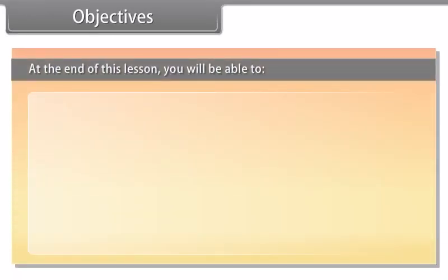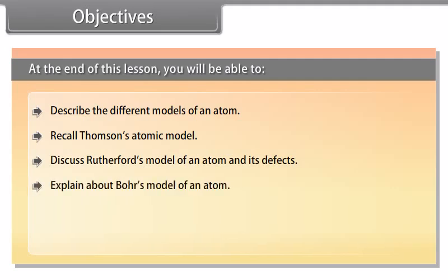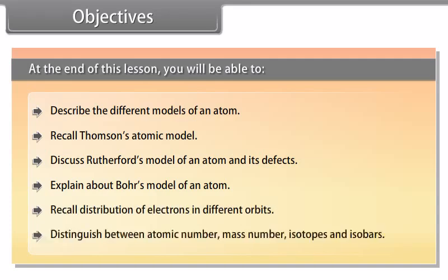Objectives. At the end of this lesson, you will be able to describe the different models of an atom, recall Thomson's atomic model, discuss Rutherford's model of an atom and its defects, explain about Bohr's model of an atom, recall distribution of electrons in different orbits, and distinguish between atomic number, mass number, isotopes and isobars.